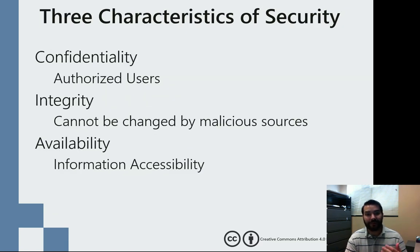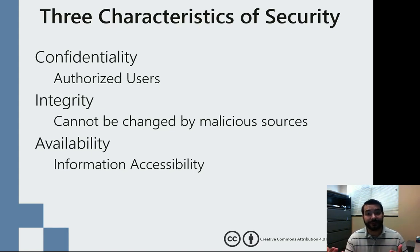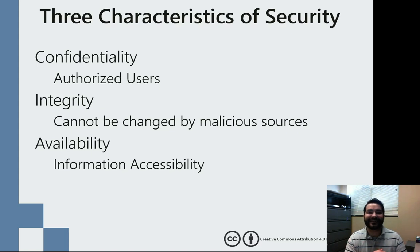So what are the three major parts of security? These are going to sound very similar to each other, but they are important to know. Confidentiality, integrity, and availability. Confidentiality means that only the authorized user has access to whatever we're talking about. Think about your grades — only two people should have access to your grades: you and myself.